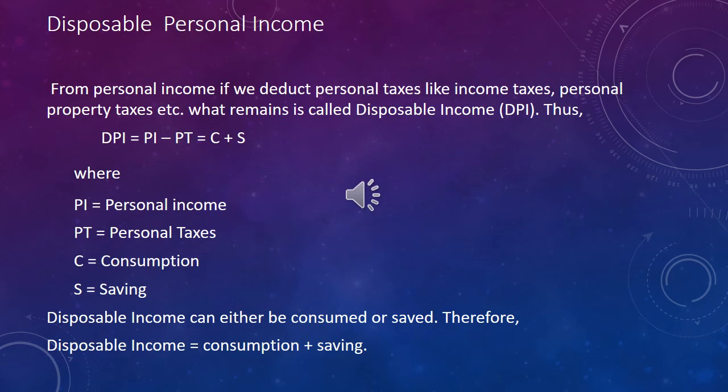The next concept is Disposable Personal Income (DPI). A person is not free to consume all his personal income as he wishes. First, he has to make necessary payments such as direct taxes. If we deduct personal taxes like income tax and personal property tax from personal income, what remains is called disposable income. The equation is: DPI = Personal Income − Personal Taxes (PT). Since all disposable personal income can either be consumed or saved, DPI = C + S, where C represents consumption and S represents saving.